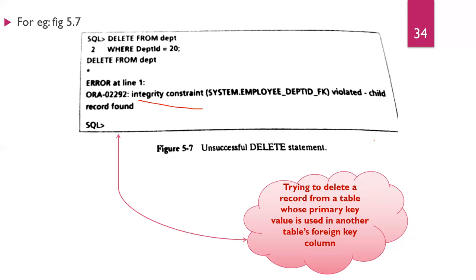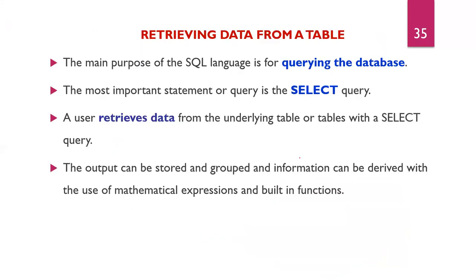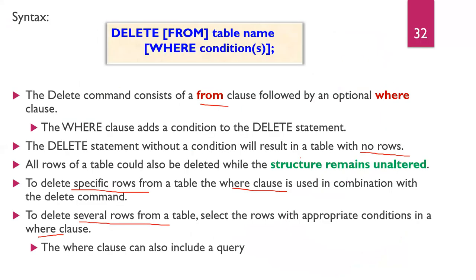Trying to delete a record from a table whose primary key value is used in another table's foreign key column will result in an integrity constraint violation error. If you have referential integrity constraints (parent-child relationship), you cannot delete a parent record that is still referenced by a child table. So INSERT, UPDATE, and DELETE are the three main DML statements.